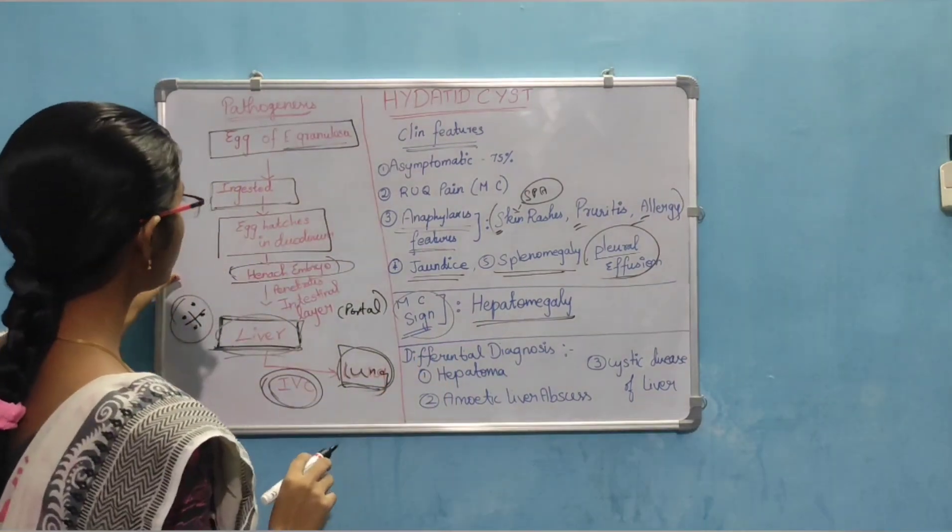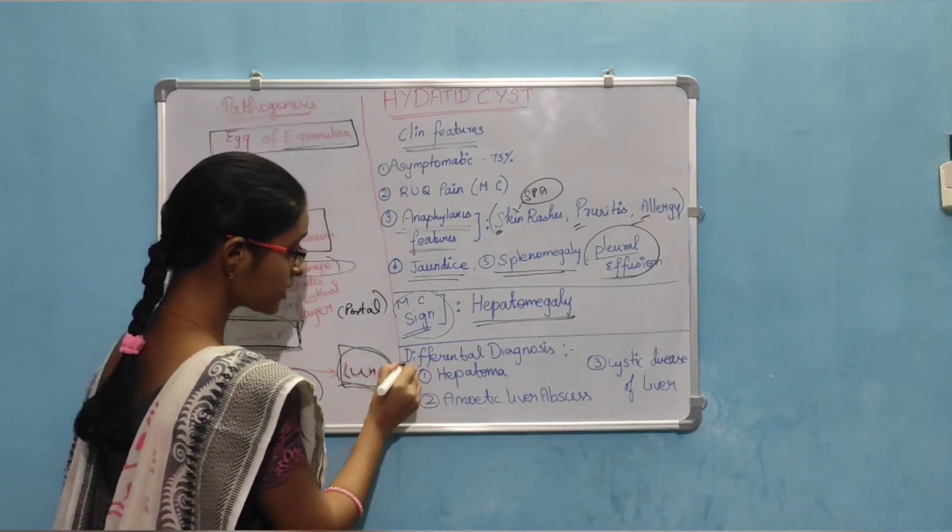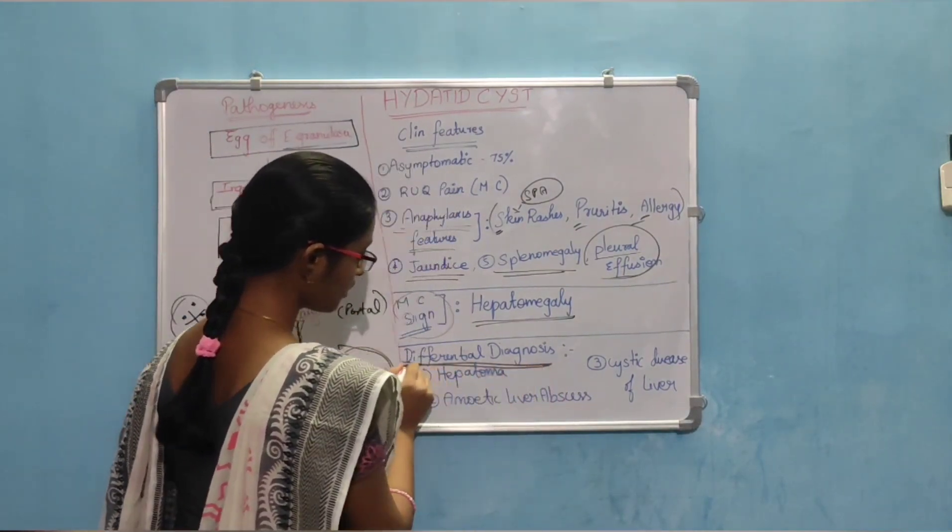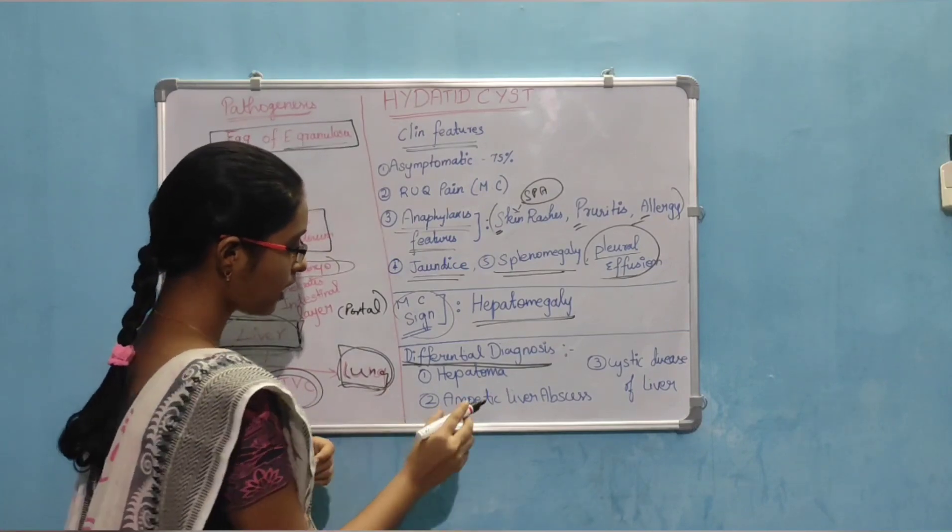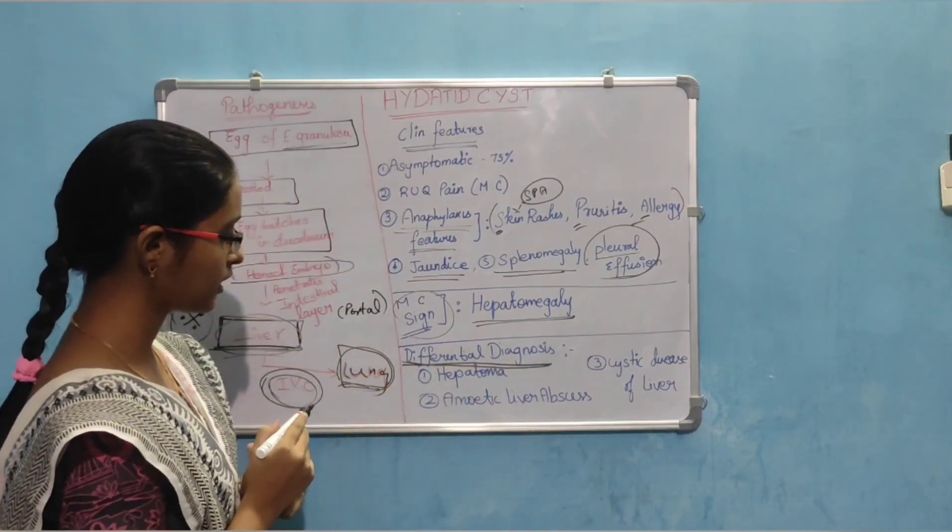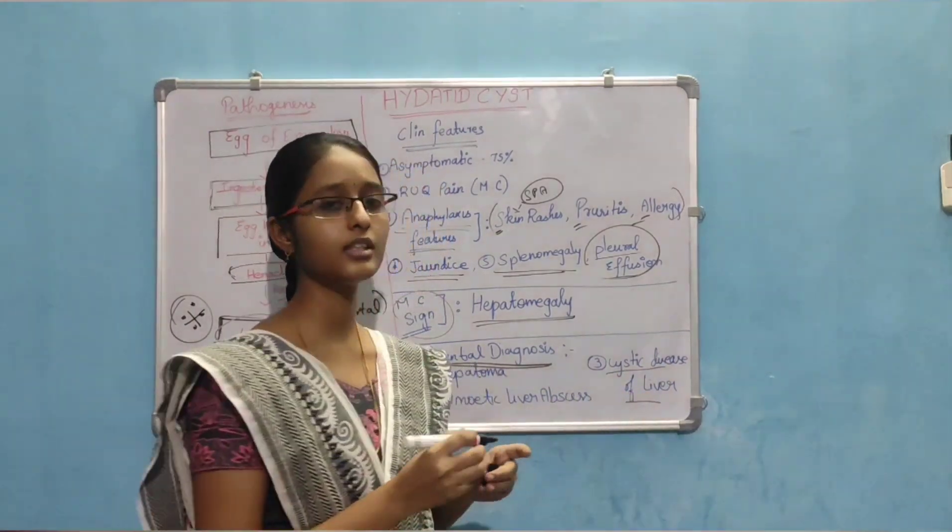Differential diagnosis similar to this is hepatomegaly, amoebic liver abscess, and cystic liver disease. Cystic disease of the liver.